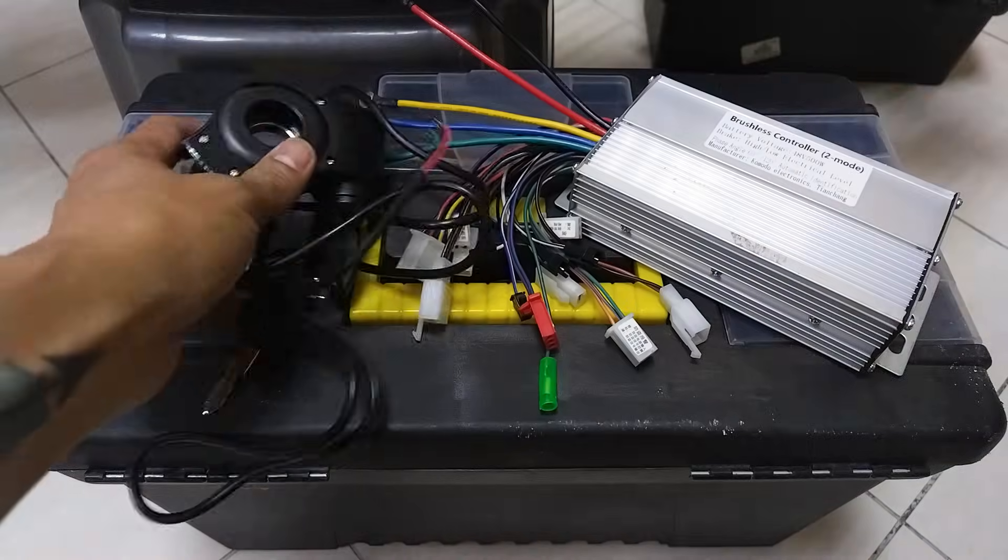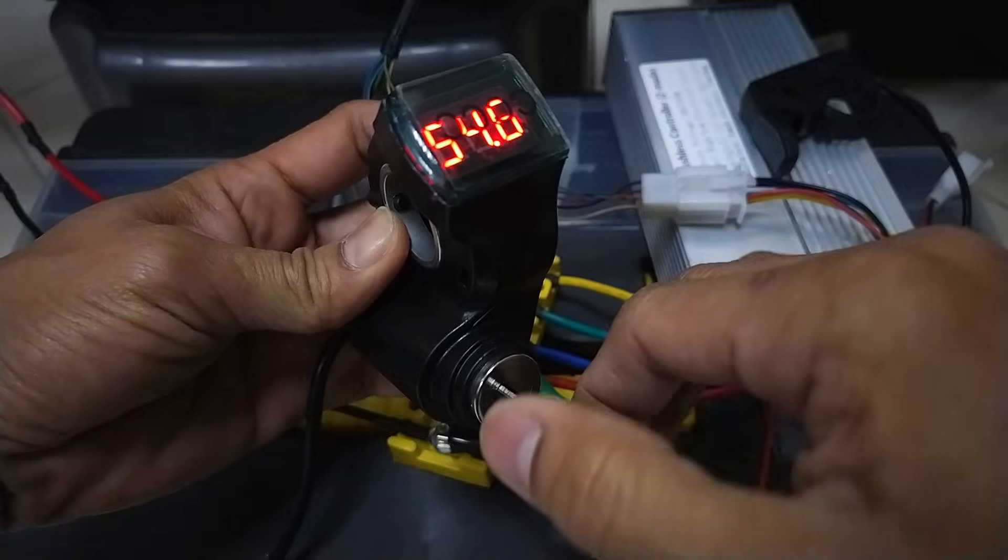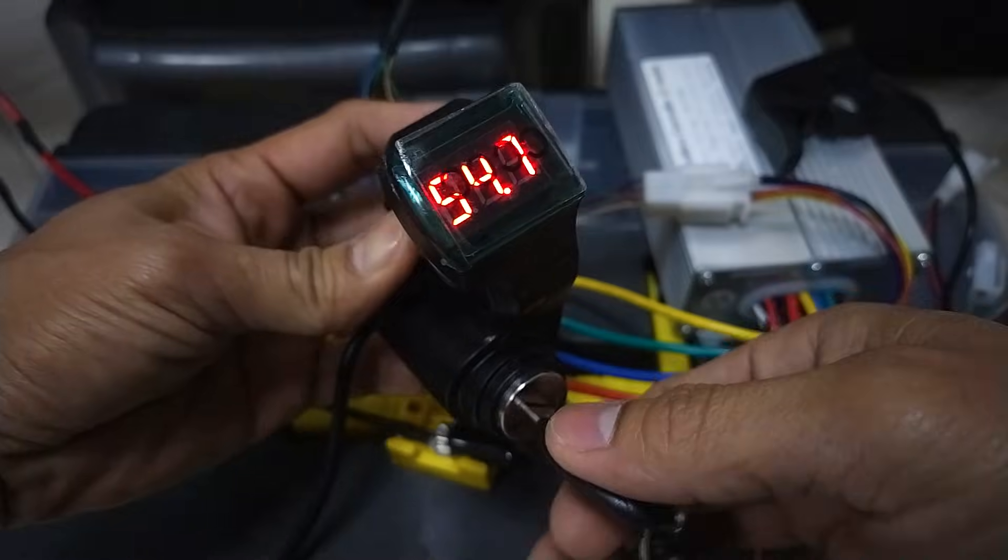Hello everyone! This is just a quick and very clear tutorial on how to connect or wire a key ignition switch with voltmeter on a brushless controller.